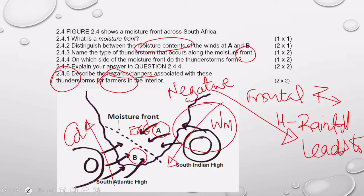Now let us talk about lightning. Lightning can strike animals in the farming precinct, whether in the grazing fields or in the yard itself. Lightning can also ignite fires in the wild, leading to what is commonly known as veld fires — field fires are also accepted in exams. Lightning can also burn down the equipment that farmers use. So you have more than enough points for the marks required. Be on the lookout: that question can also be set as a paragraph, where it says, in a paragraph of approximately eight lines, discuss the hazards or dangers associated with line thunderstorms to farmers.